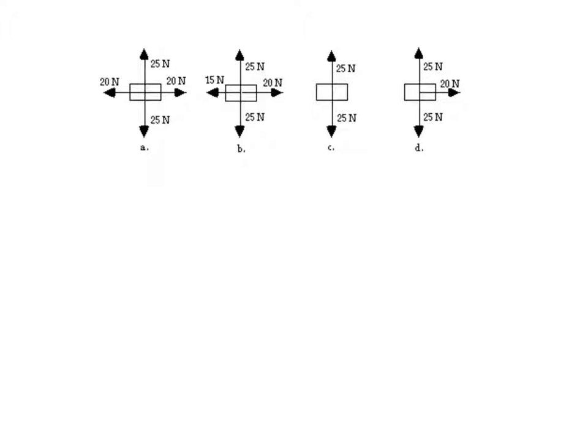So if we want to figure out which of these blocks is accelerating, we're going to look for unbalanced forces. Okay, first guy, 25 up, 25 down, cancelled. 20 forward, 20 back, cancelled. So not A.